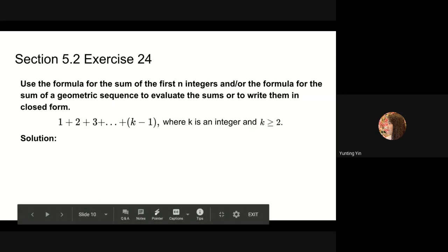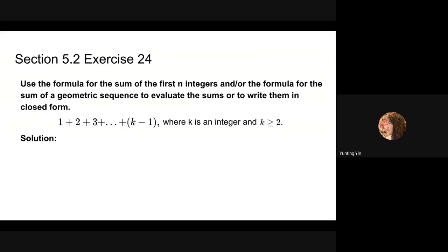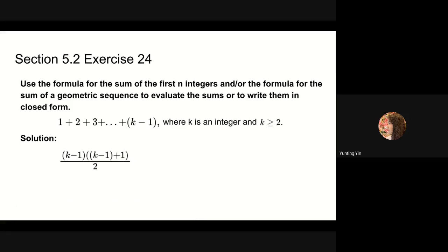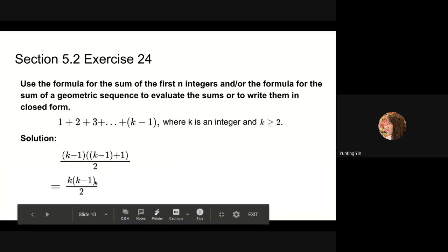The next part of problem 20 also asks us to write the sum in closed form. Here we directly apply the formula for the sum of the first n integers: 1 plus 2 plus 3 up to k minus 1 becomes (k−1) times (k−1+1) over 2. The minus 1 and plus 1 cancel out, giving us k times (k−1) over 2.